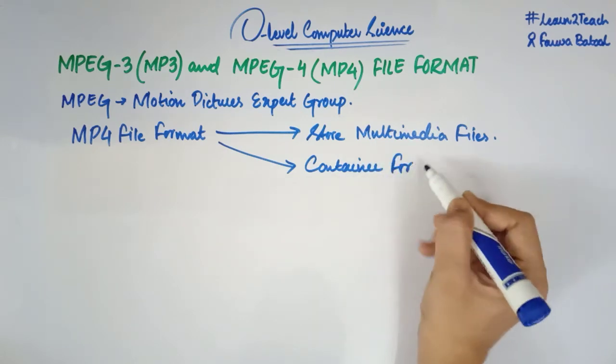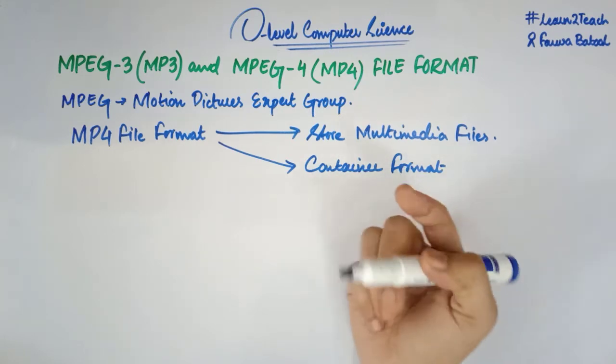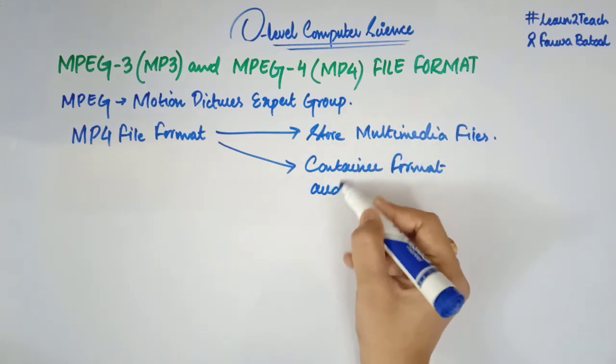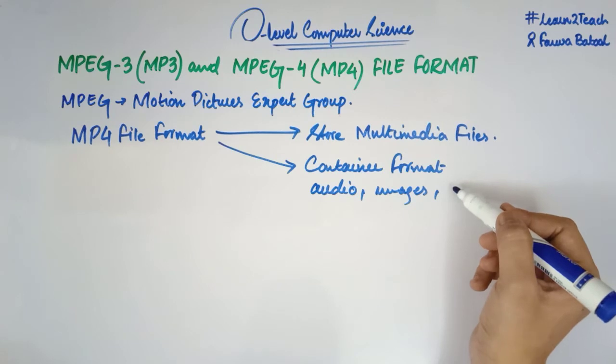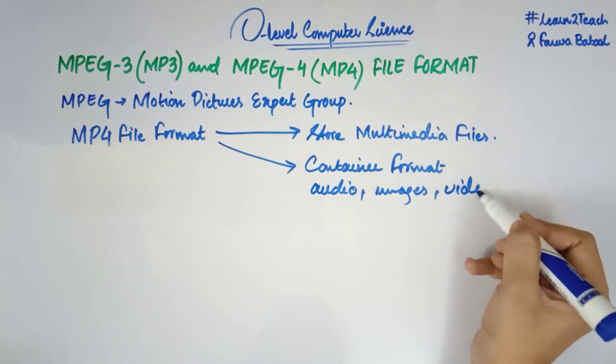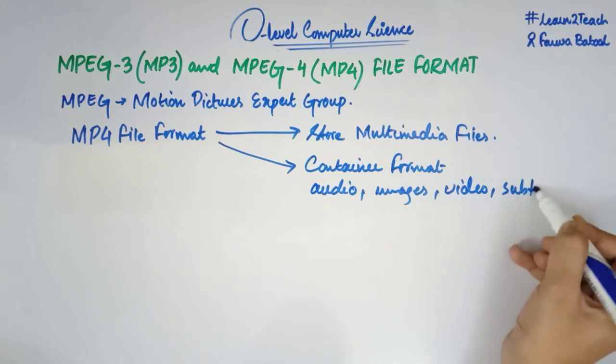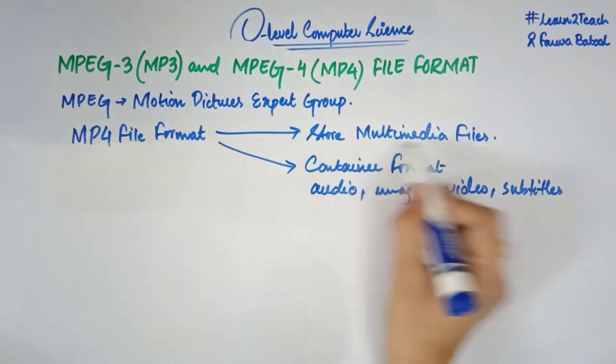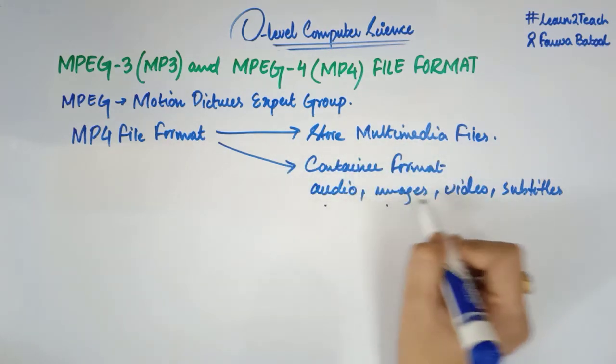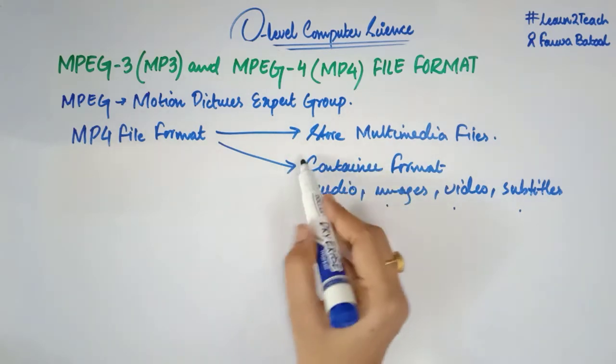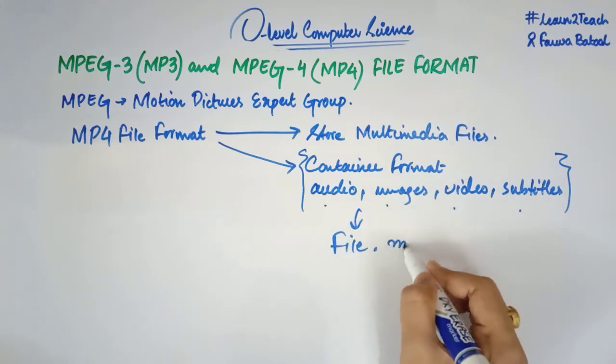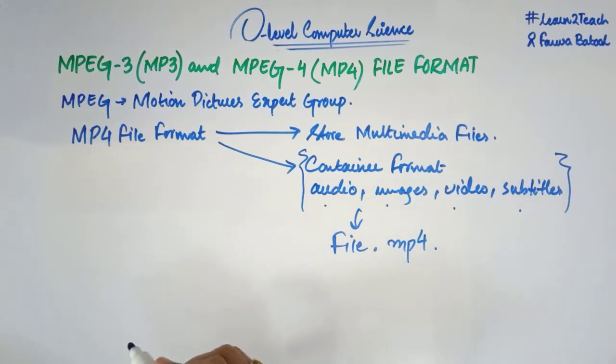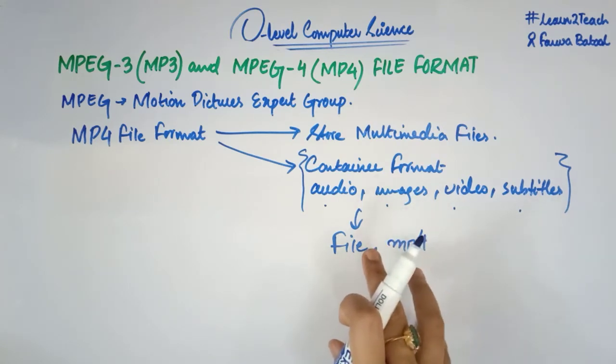Why? Because it is having everything inside a single file. It is having audio, having images, having video, even subtitles as well. Sometimes we have subtitles in the videos. So it's a container format that is going to have multiple file types in a single file. You are having all these things in a single file that has a .mp4 extension. This particular MP4 file format is going to have .mp4 extension in order to recognize that.